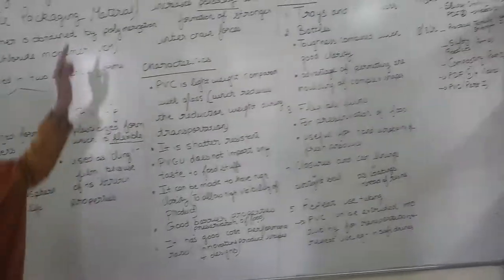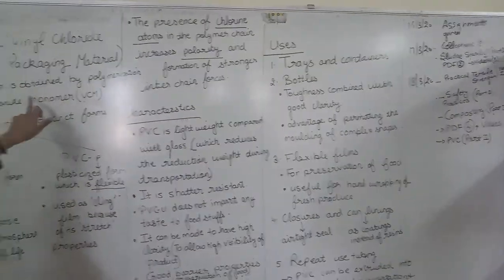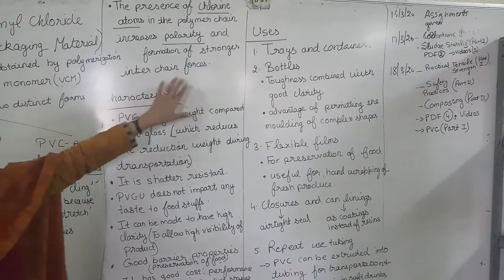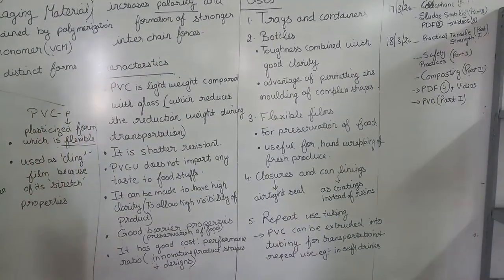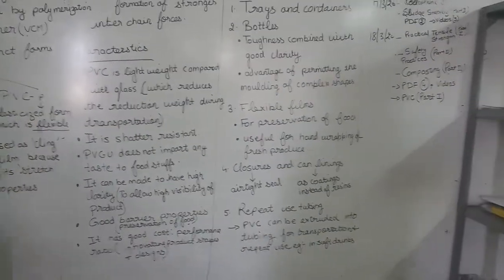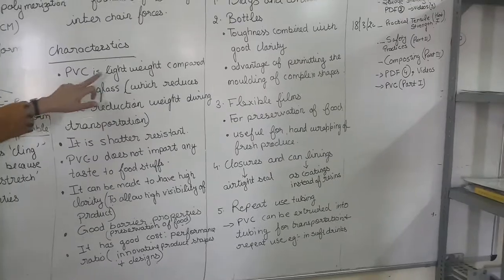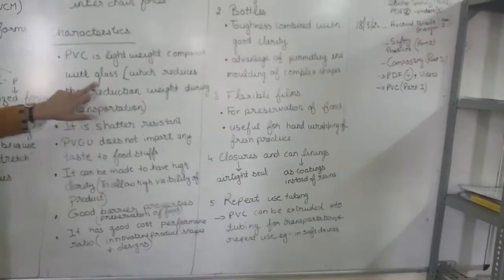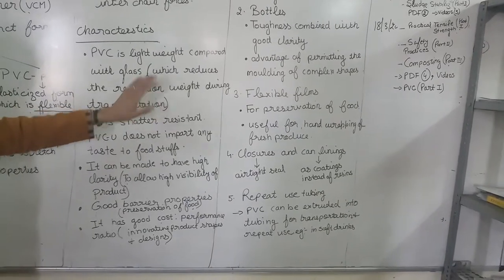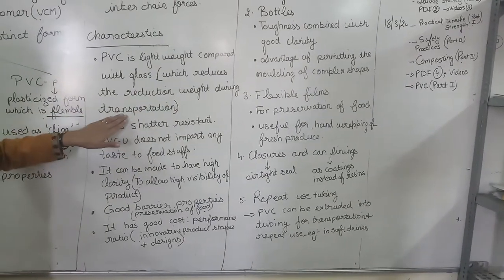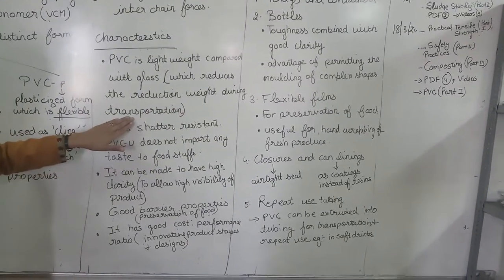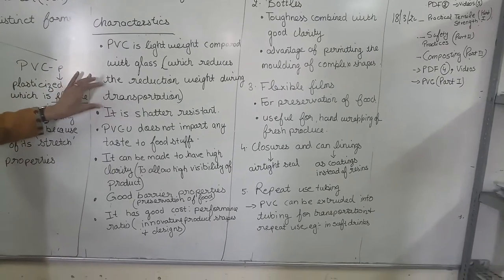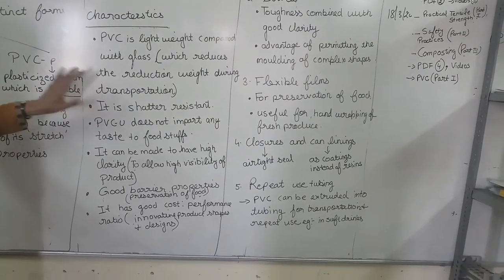The presence of chlorine atoms in the polymer increases the polarity and formation of stronger inter-chain forces. One key characteristic of polyvinyl chloride is that it is lightweight as compared to glass. Because of this reduction in weight, it is useful to use PVC as it reduces transportation cost.